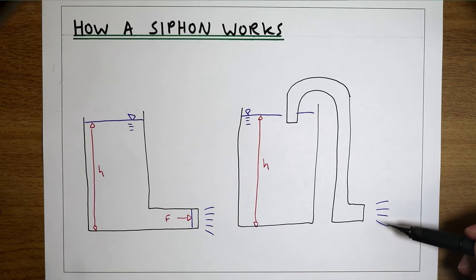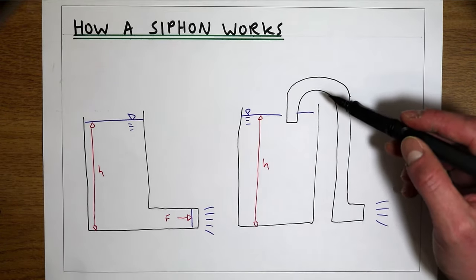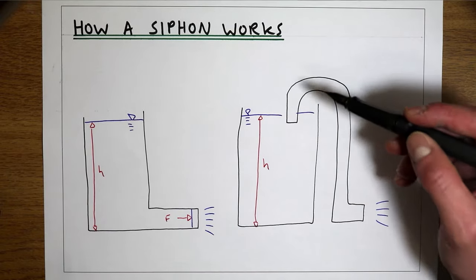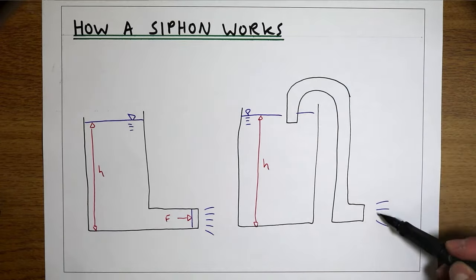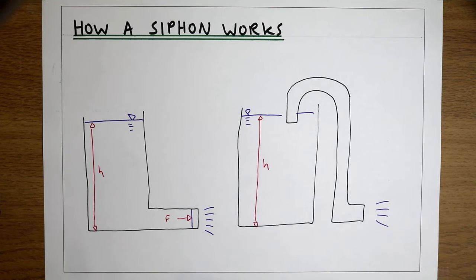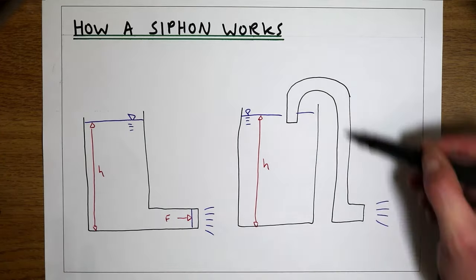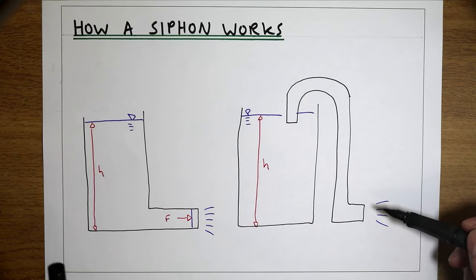The key to this is that the pipe is full of water. If the pipe is not completely full of water, what's going to happen is the pipe will just empty itself out and the flow will stop. But the question is: why does the pipe not empty itself when it is full of water? Why does it not just empty itself and stop in that situation?